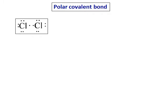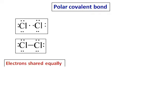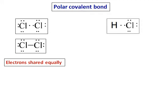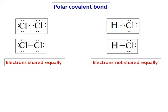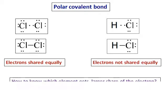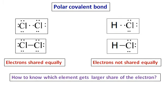We just revised what a covalent bond is. Now we are going to look at what a polar covalent bond is. Consider a bond formed between Cl and Cl — the electrons are shared equally because both elements are the same. But consider the bond formed between hydrogen and Cl — each one gives one electron. Do you think the electrons are shared equally, or does one element get a larger share?